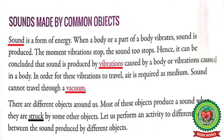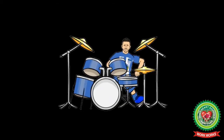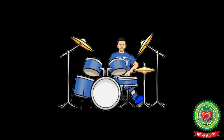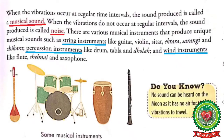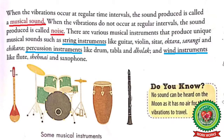There are different objects around us, and these objects produce sound when they are struck by some other objects. Underline the word 'struck' and write down its meaning: to strike repeatedly. Objects produce sound when they are struck repeatedly. When the vibrations occur at regular time intervals, the sound produced is called a musical sound.